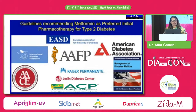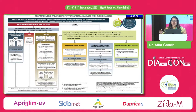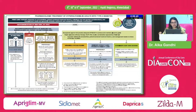All guidelines like EASD, ADA, IDF recommend metformin as the first drug of choice. But the current ADA 2022 guidelines say that first-line therapy depends on comorbidities as well as patient-centered treatment factors. We have to consider cost, accessibility and management needs. Metformin and comprehensive lifestyle may be the first choice, but depending on comorbidities, other agents can be used as first choice.